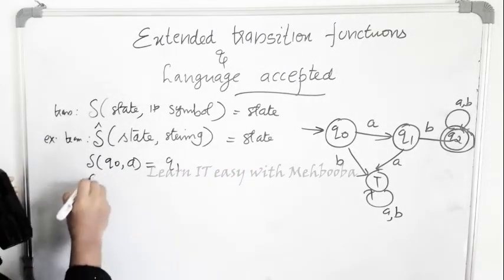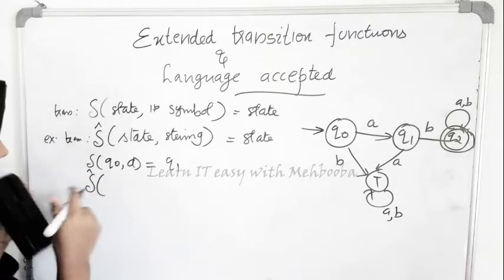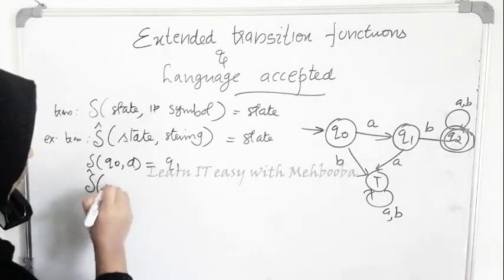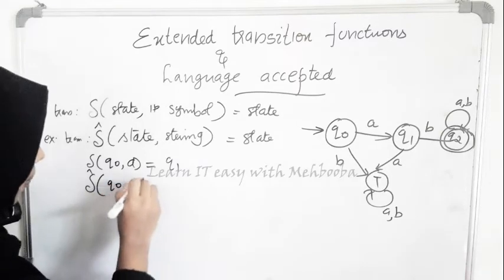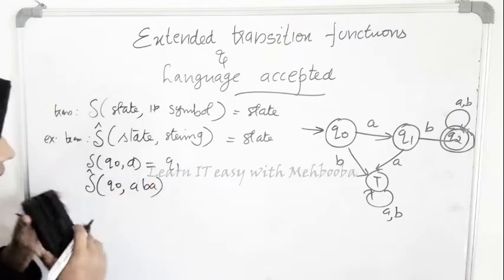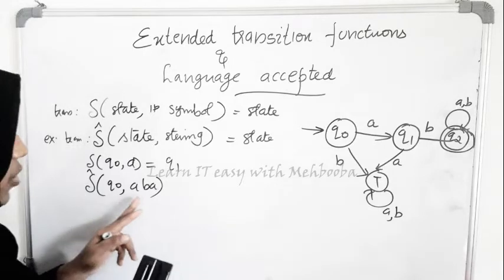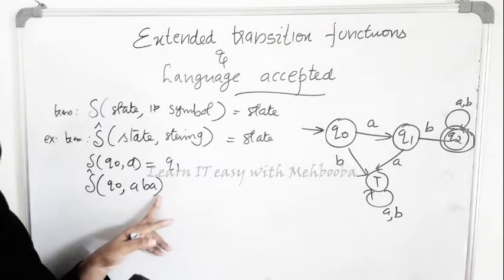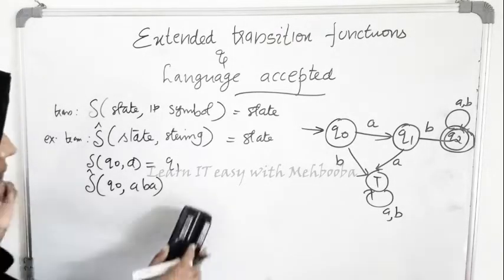For delta-cap, you can write it as delta-cap of q0, a, b, a — because in the case of delta-cap, you can apply a string. Now we will see how exactly delta-cap works.